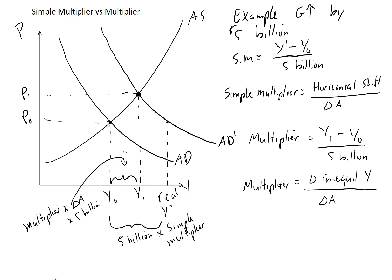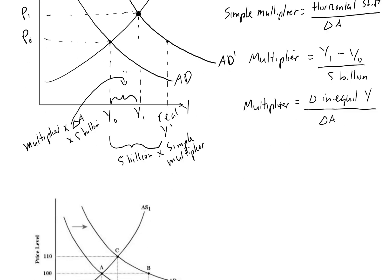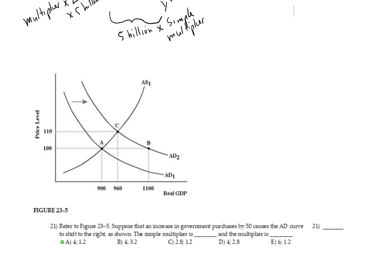Let's look at a quick example to practice what we just learned. We're given a diagram with the AD curve shifting to the right, and the question reads: refer to figure 23.5 — suppose that an increase in government purchases by 50 causes the AD curve to shift to the right as shown. So G is increasing by 50. The simple multiplier is blank and the multiplier is blank.